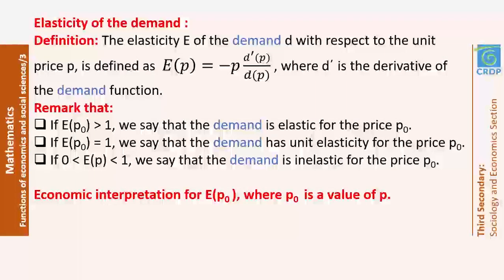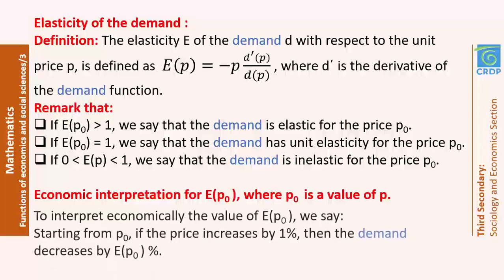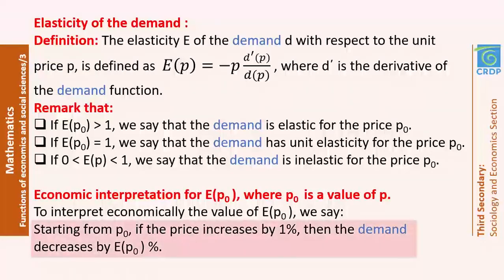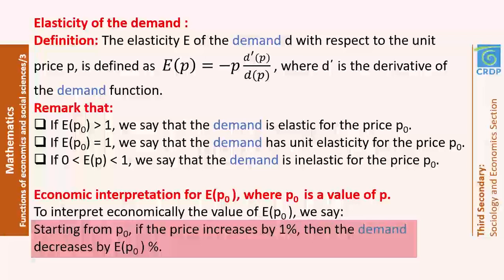For the economic interpretation: if the question asks you to interpret economically the result of E(P₀) for a specific unit price, you need to say that starting from P₀, if the price increases by 1%, then the demand decreases by E(P₀)% (the obtained value followed by the percent symbol).